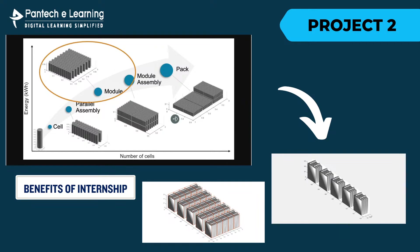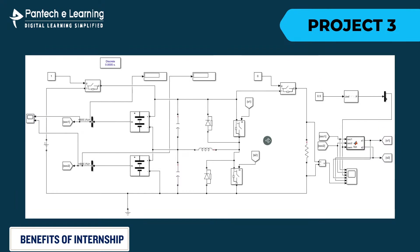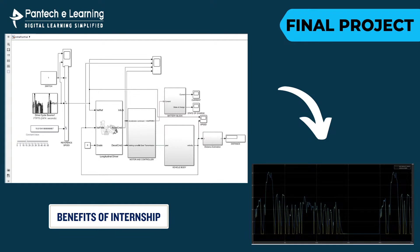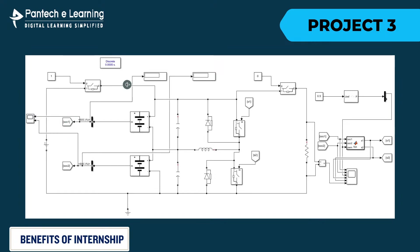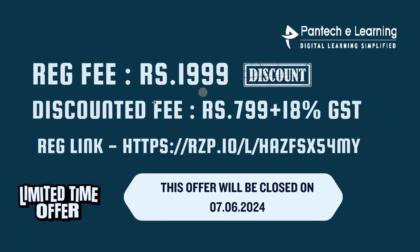You will also get the battery pack simulation. The next project is active cell balancing — this is the active cell balancing simulation model. If you are an internship user, you will get the simulation files, PPTs, and recorded content on how to make this model, how to pick the block from the library, and how to connect everything. Tomorrow I will show you the next three projects. These are the project names and these are the benefits of our internship.